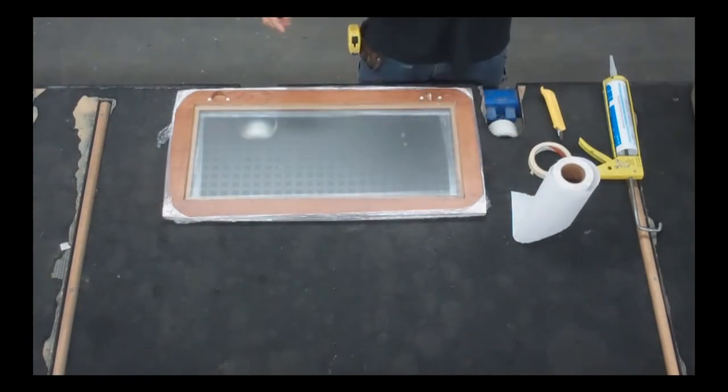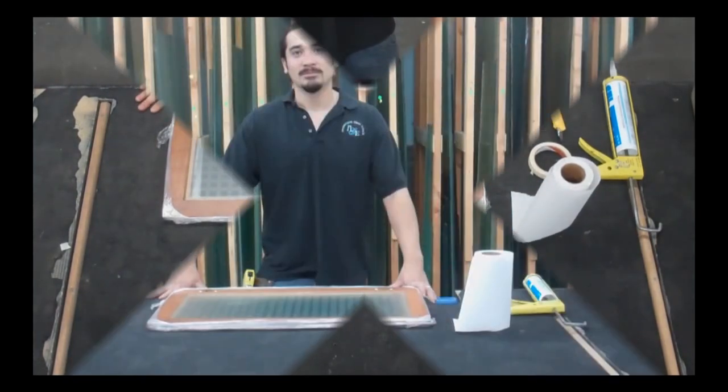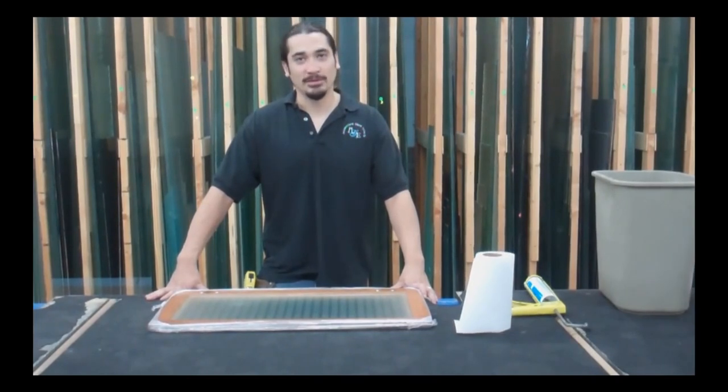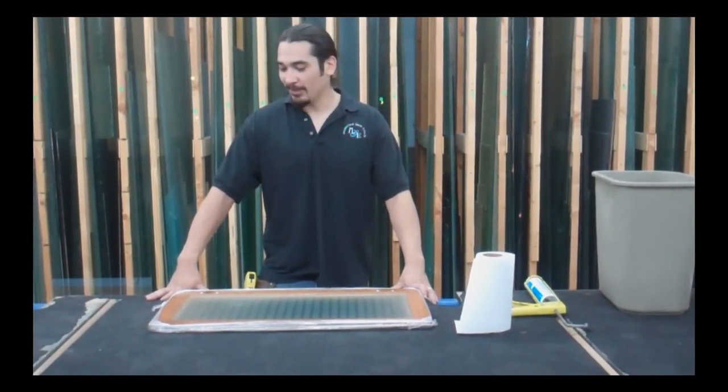And there you go. We're done. It's a beautifully installed cabinet door. Now that you've installed your glass into the door, all you need to do is wait a few hours for the silicone to set and then you can reinstall your door.